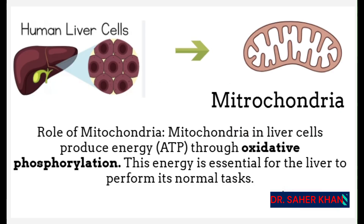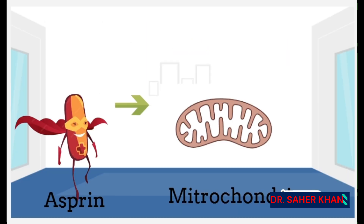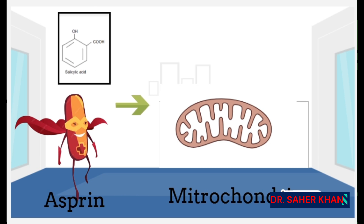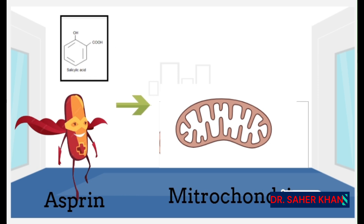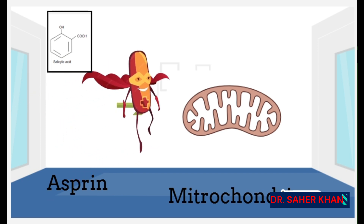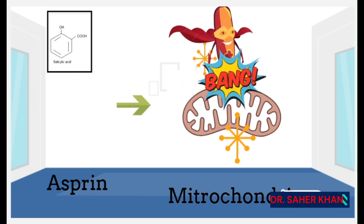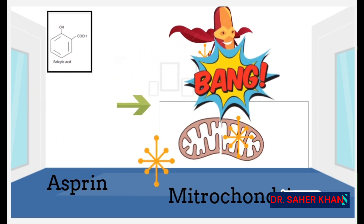It all starts with the liver. The liver cells, known as hepatocytes, contain tiny powerhouses called mitochondria. These mitochondria are essential for providing energy to the hepatocytes by producing ATP. Here's where aspirin comes into play — aspirin contains a compound called salicylic acid, and this salicylic acid is what damages the mitochondria in the liver cells.